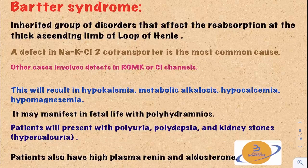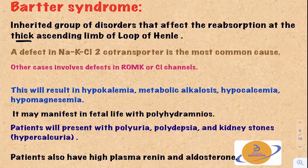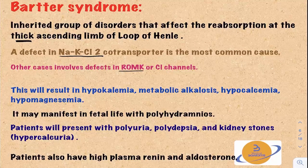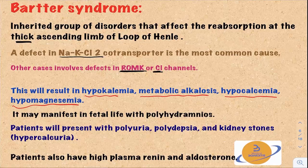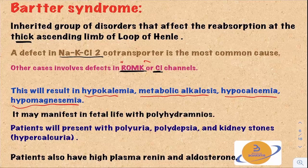Bartter syndrome is an inherited group of disorders affecting reabsorption at the thick ascending limb. Most commonly it results from a defect in NKCC2, though defects in ROMK or the chloride channel are also reported. Disruption of any of these channels causes hypokalemia, metabolic alkalosis, hypocalcemia, and hypomagnesemia. The hypokalemia and alkalosis result from compensatory activation of the renin-angiotensin-aldosterone system due to urinary sodium loss, which increases distal sodium reabsorption but increases potassium and hydrogen ion excretion.